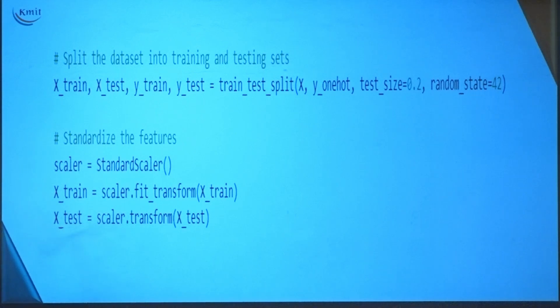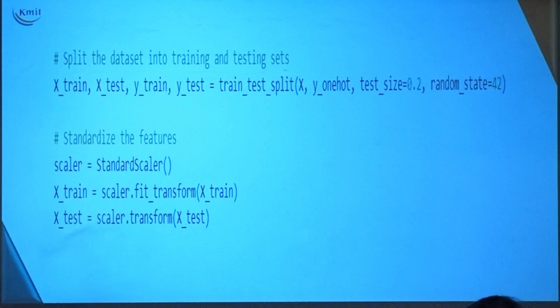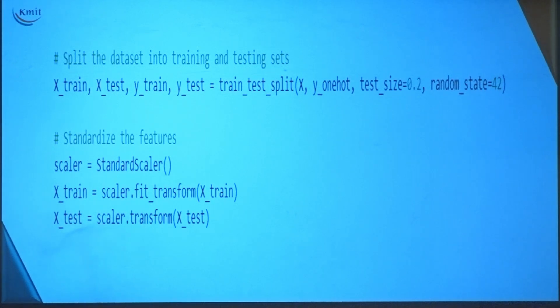Hope you are clear. The main reason is data consistency — the testing data should be standardized using the same parameters as training. Now the next step is to initialize weights and biases. Previously you had one input layer, one hidden layer, and an output layer. Now you have to add another hidden layer.